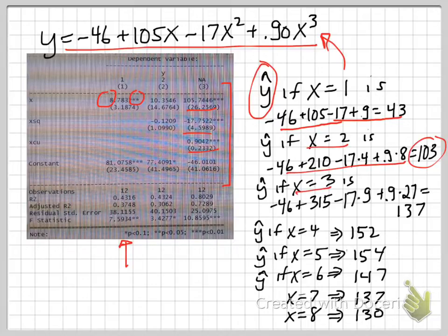If x is equal to 3, we get predicted y of 137. If x equals 4, y continues to rise. Predicted y is 152. When x is equal to 5, it continues to rise. But notice now, as x equals 6, now our change in y is negative. So y is going down, and it keeps going down as x rises.